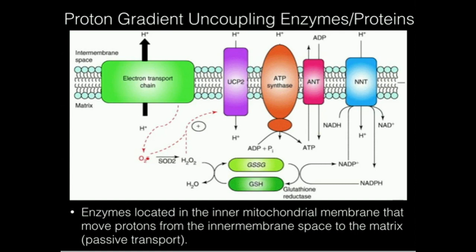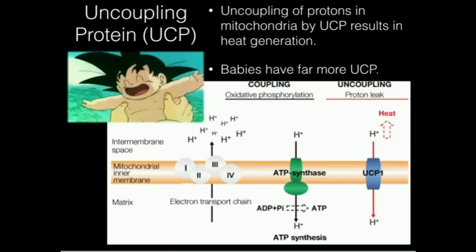We'll find that these proteins — particularly the one in blue and the purple one — are of vital importance for certain things, i.e., the uncoupling protein designated UCP. The uncoupling proteins are situated in the same membrane of the mitochondria as ATP synthase — the inner membrane.